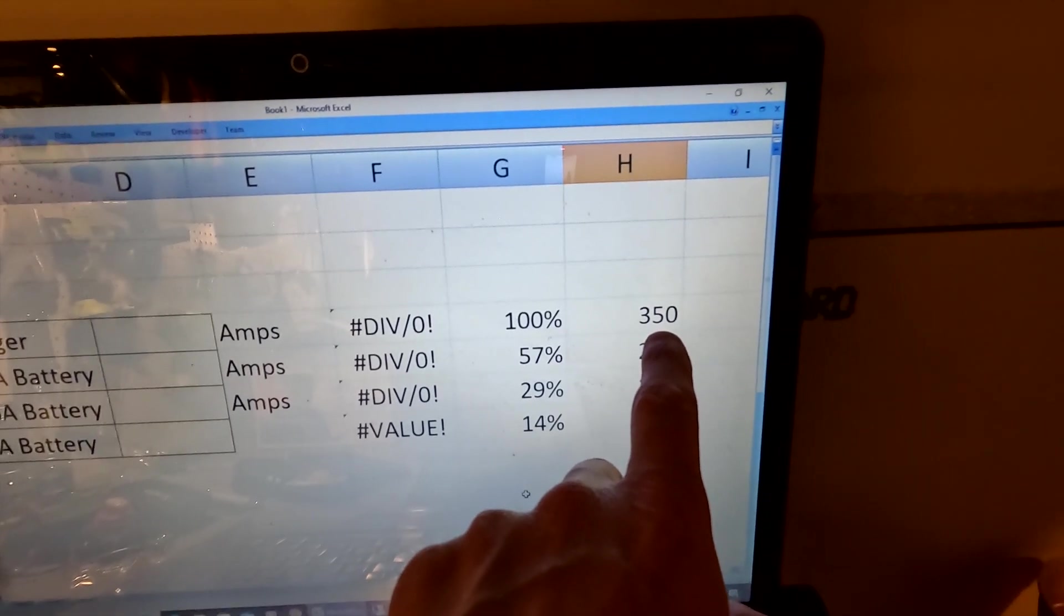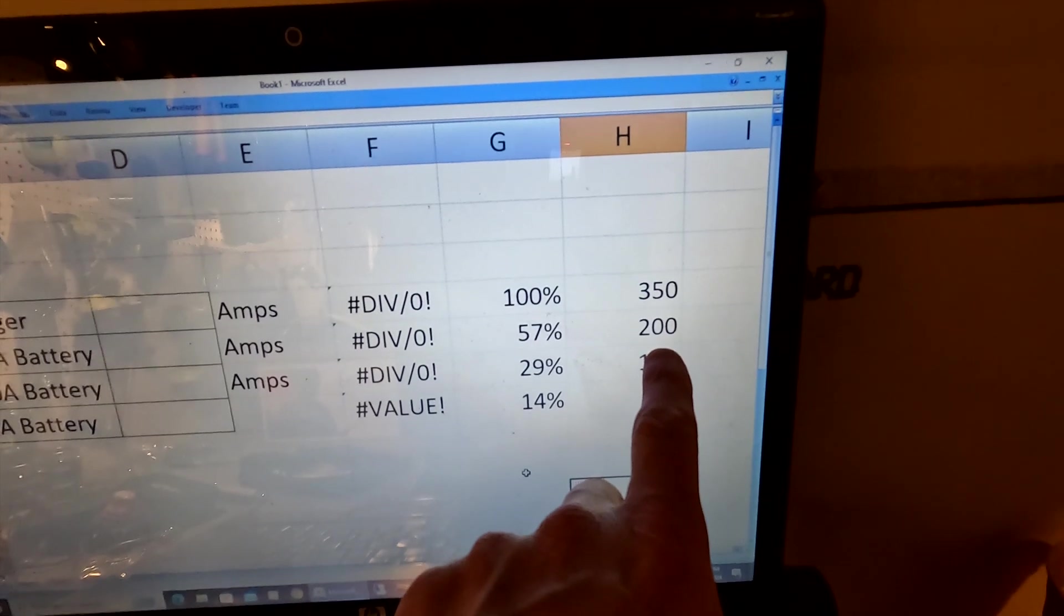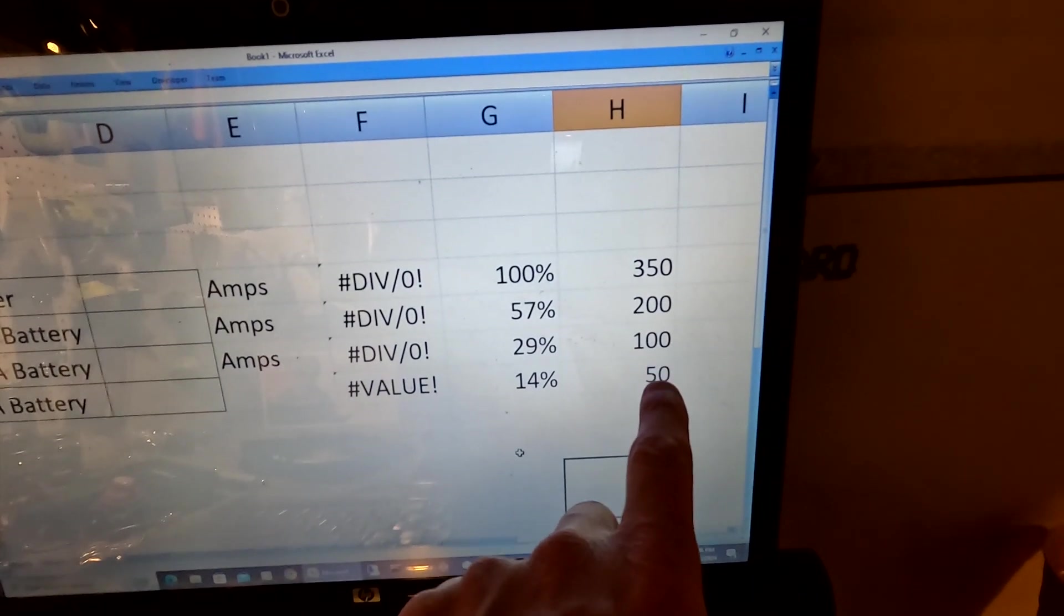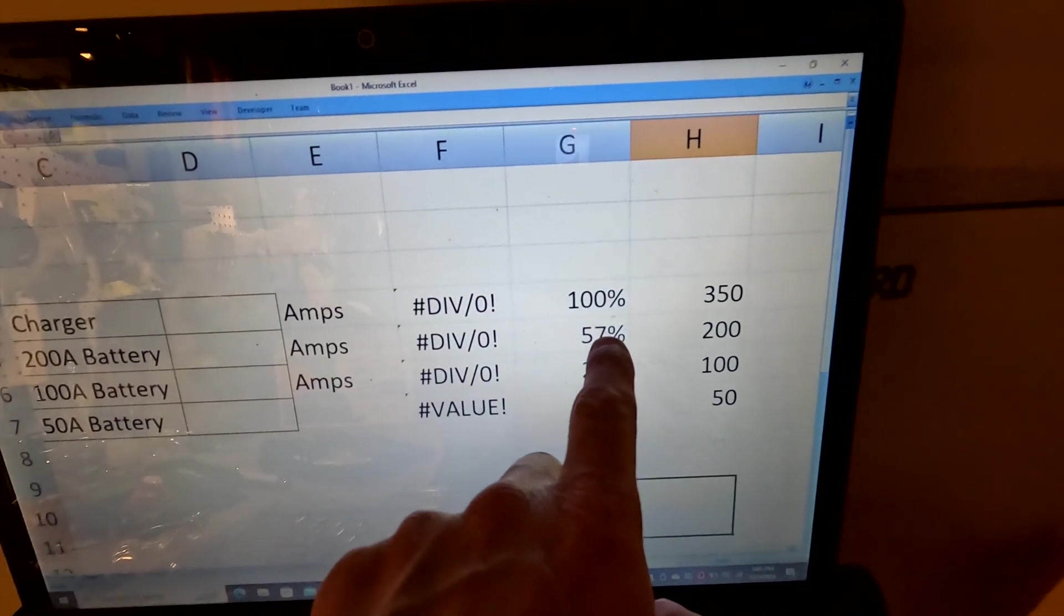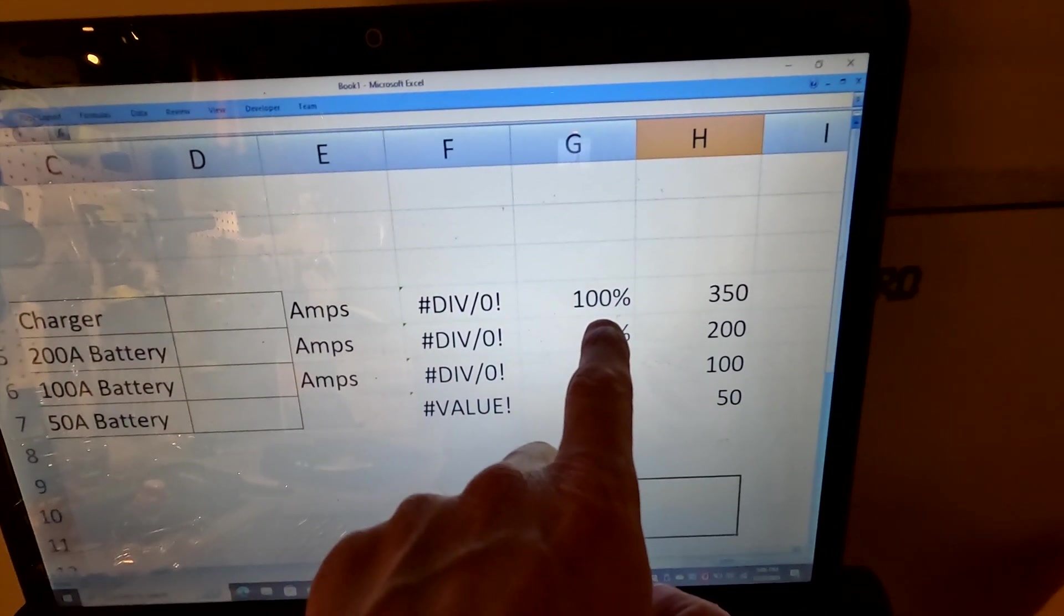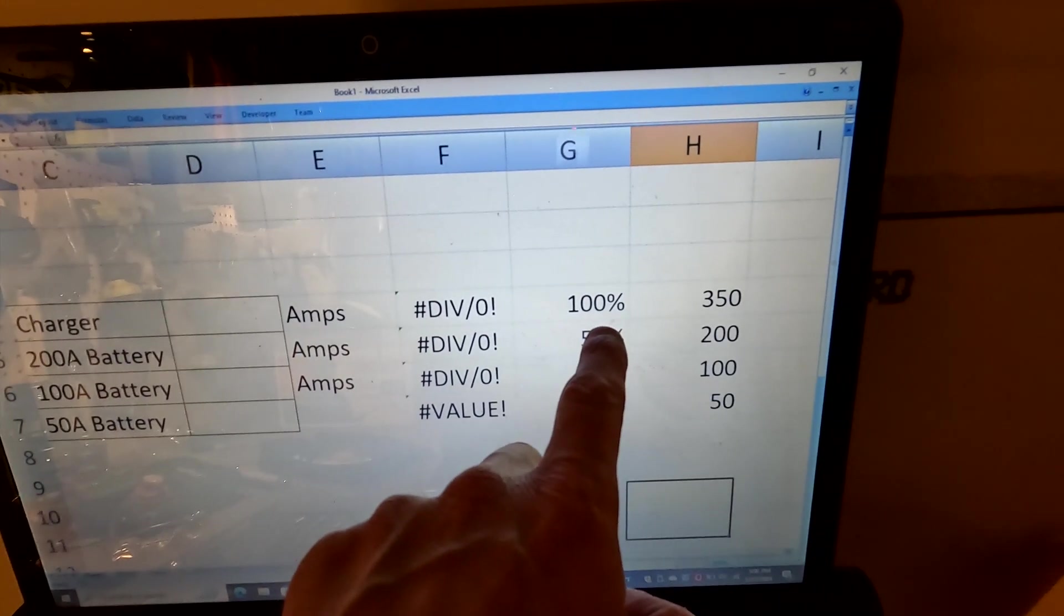350 amp hours is the total capacity of the bank. And what we have is a 200 amp hour battery, a 100 amp hour battery, and a 50 amp hour battery. Now if you look over here, the total amp hours is 100% of the bank. So 350 is 100% of the total bank.